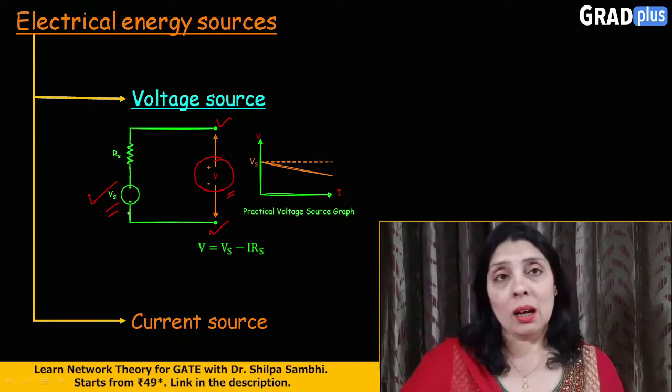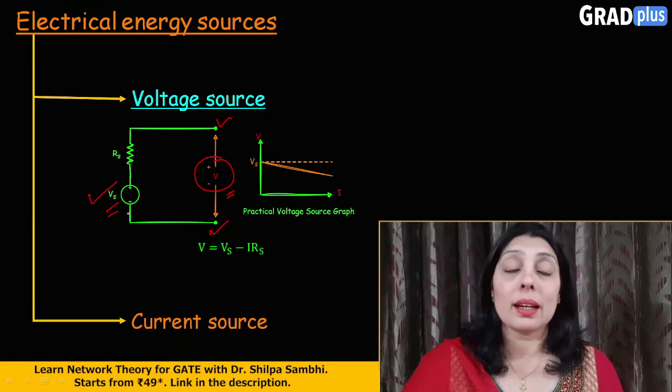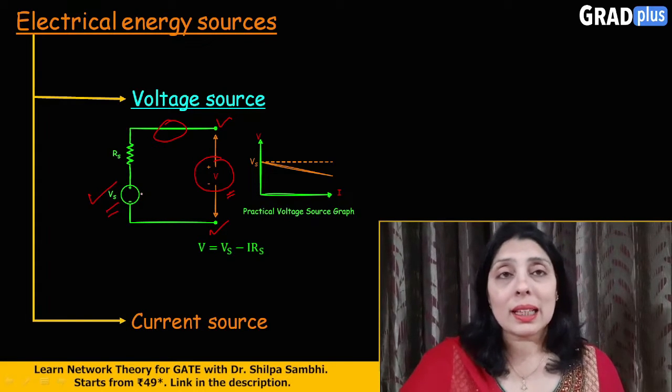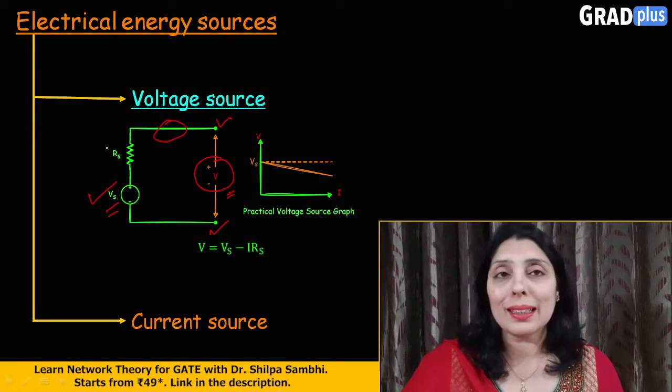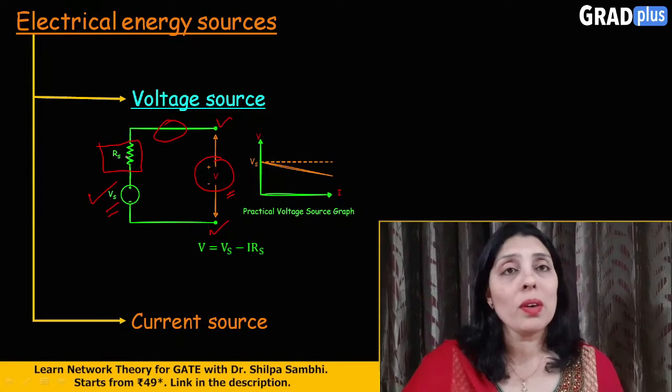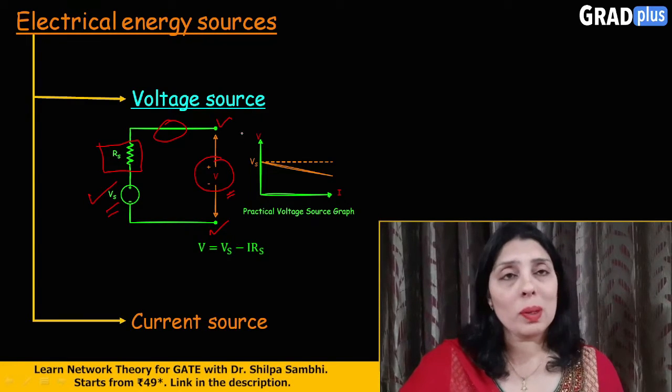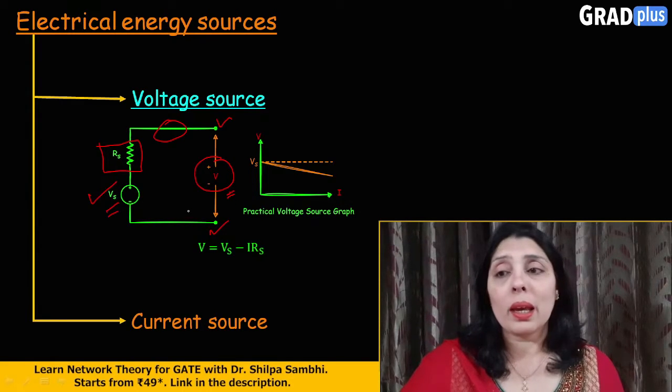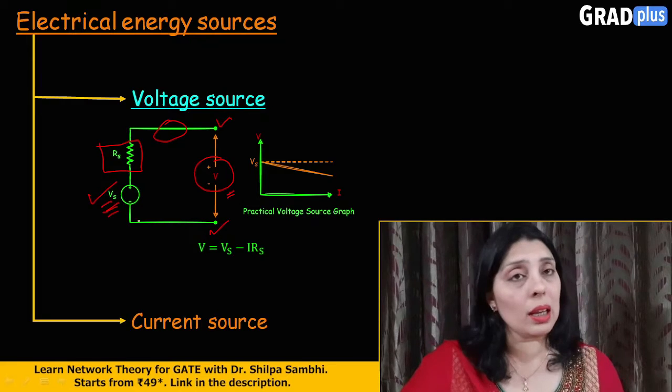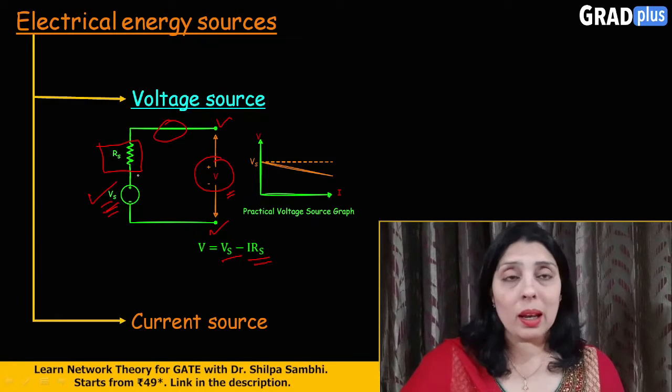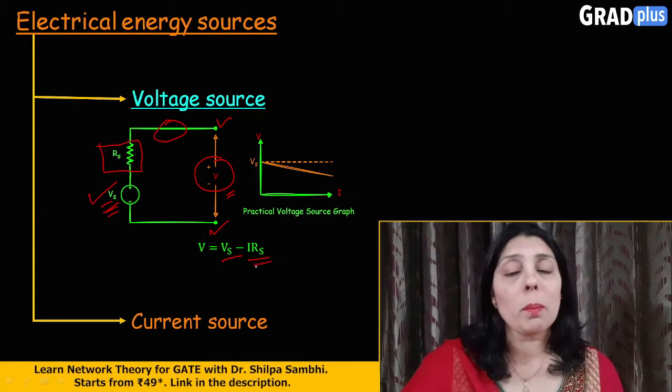Then, the next opposition or the resistance is provided by the resistance in the material of these conducting wires. So, together, these resistances are collected together and they are shown in the form of a series resistance which is presented here in the form of Rs. So, ultimately, what will happen if you simply apply Kirchhoff's voltage law, you will say that the voltage across the terminals here will be equal to the voltage given by this voltage source Vs minus the voltage drop which is appearing across this resistance Rs. So, ultimately, the terminal voltage V will be equal to Vs minus IRs.